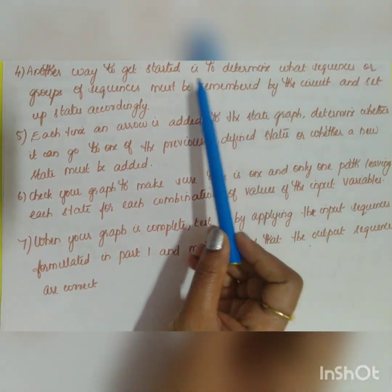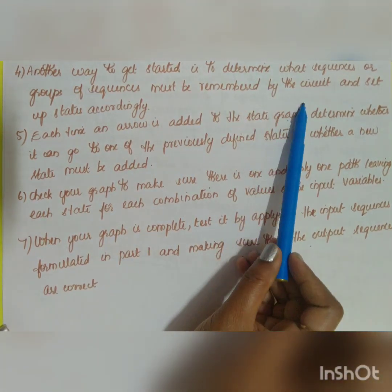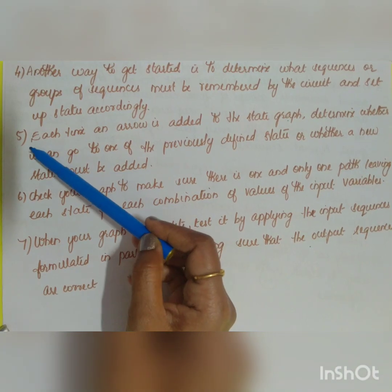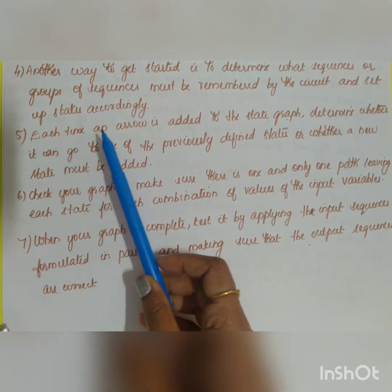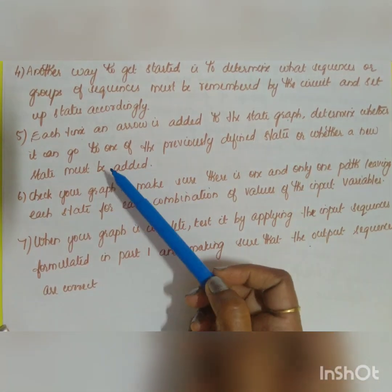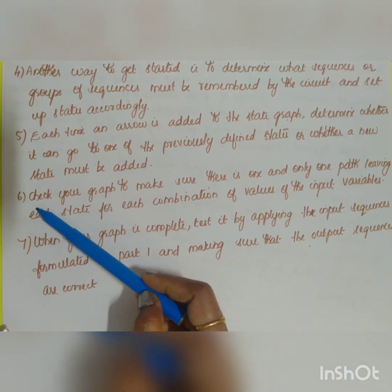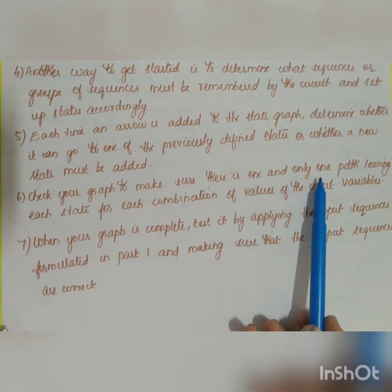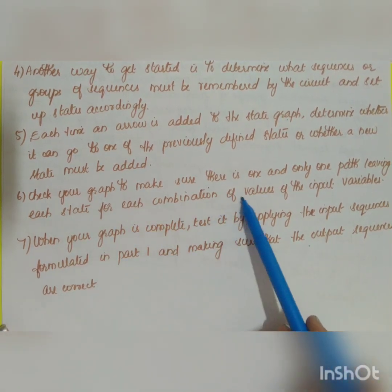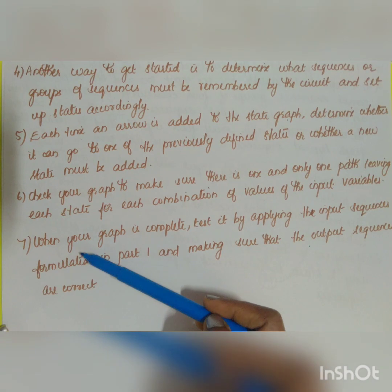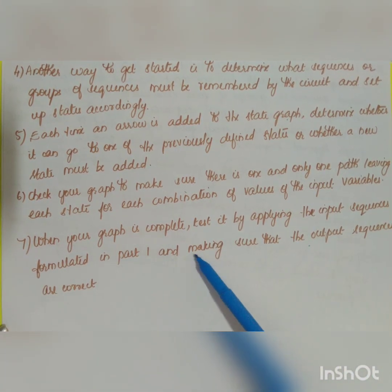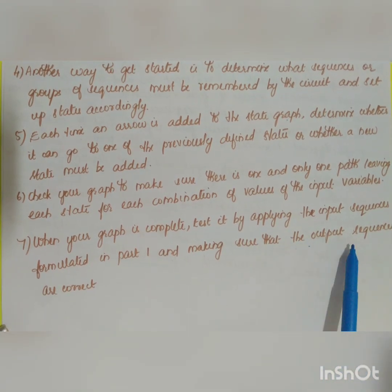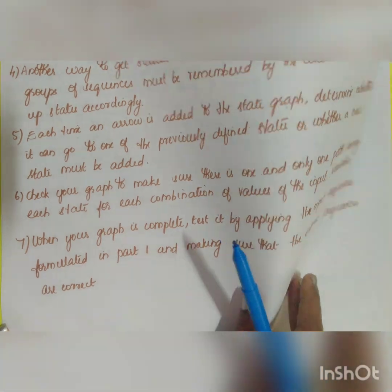Step four: after forming the partial state graph, determine what sequences or groups of sequences must be remembered by the circuit and set up states accordingly. Step five: each time an arrow is added to the state graph, determine whether it goes to a previously defined state or a new state must be added. Step six: check the graph to ensure there is one and only one path leaving each state for each input combination. Step seven: when the graph is complete, test it using the input sequences from step one and verify that the output sequences are correct.